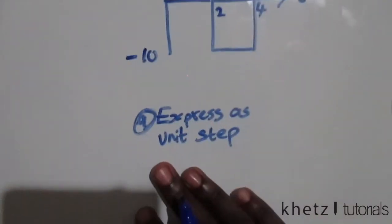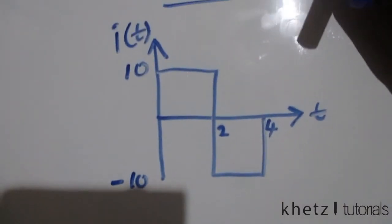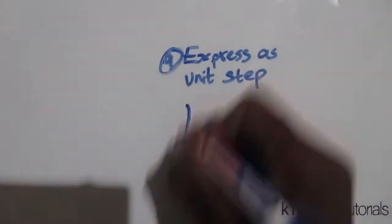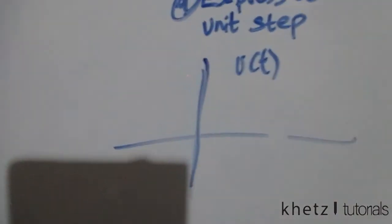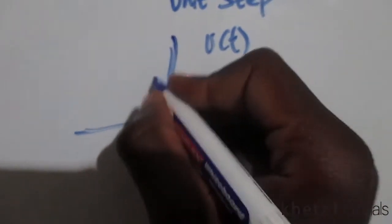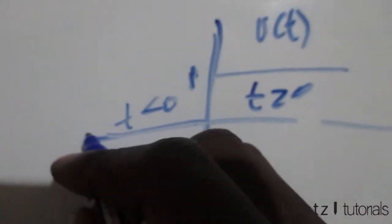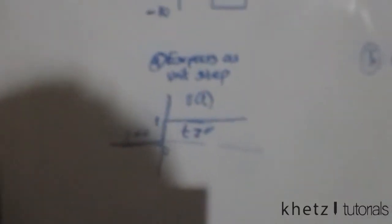Given this diagram, the first part says express as a unit step. We use the information from the textbook. A unit step function has an amplitude or maximum value of one, and this value is only in effect for time greater than zero. For time less than zero this function is zero, so it's only one from t=0 onwards.